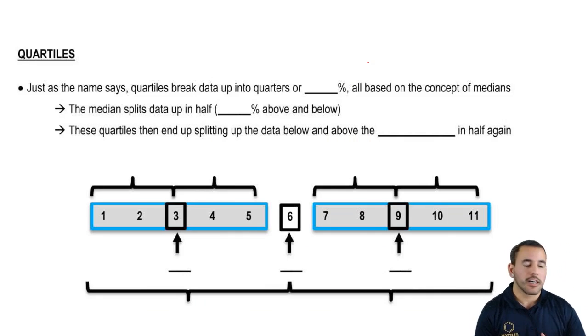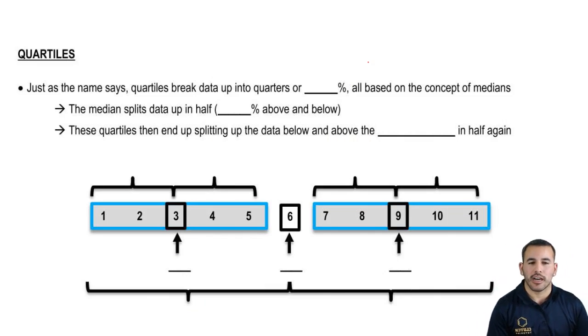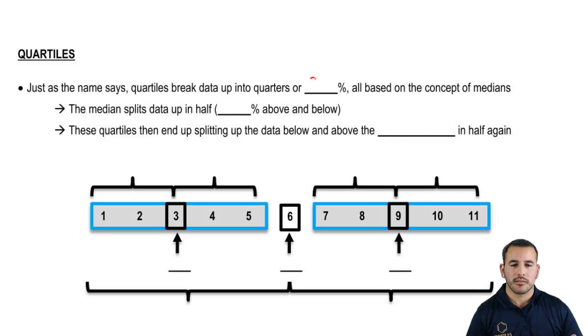Just as the name states, quartiles break up data into quarters or 25%, based on the concept of medians. Using the same idea of a median, we break up data not into half but now into fourths.